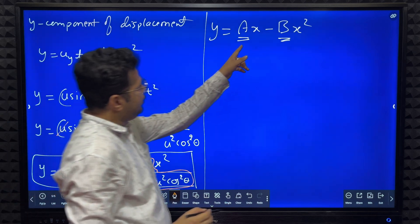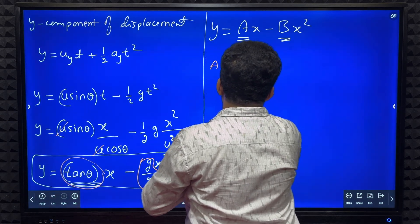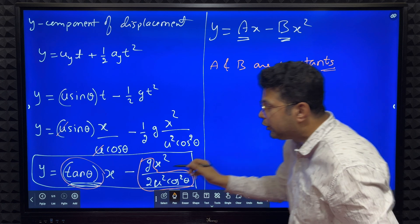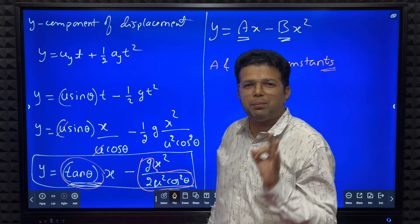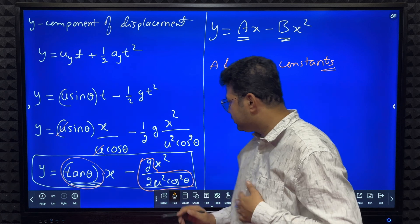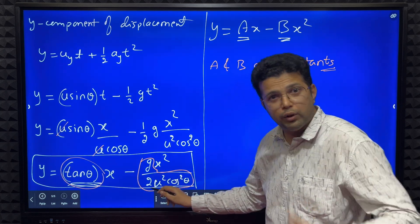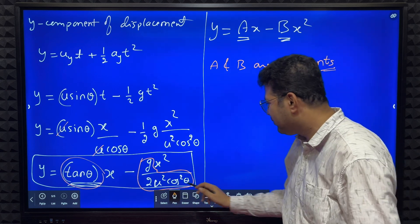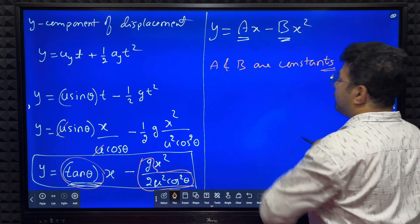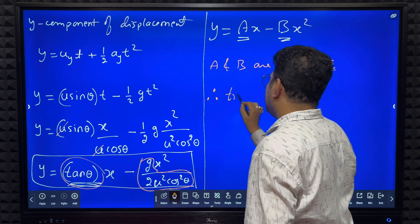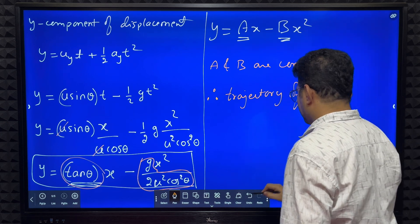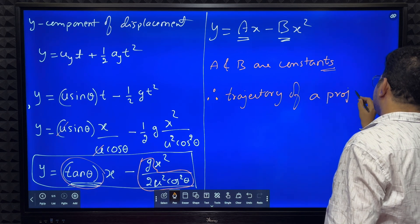In the equation of a parabola, a and b are constants. Let's check: θ is the angle of projection — for a given projectile it is constant, so tanθ is constant. g is acceleration due to gravity — constant. 2 is a constant. u is the initial velocity — constant. Everything is constant, so this equation is in the form y = ax − bx². Therefore, we conclude that the trajectory of a projectile is a parabola.